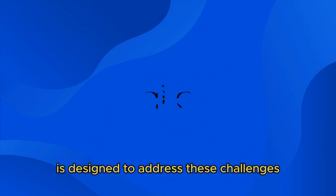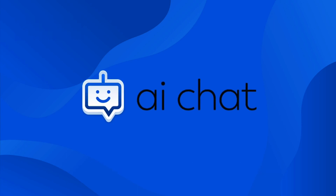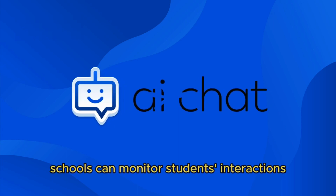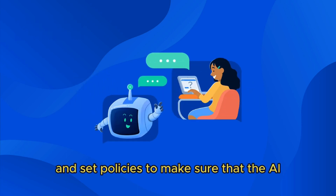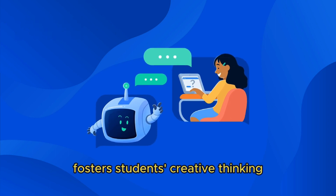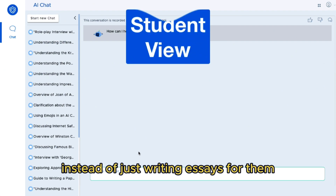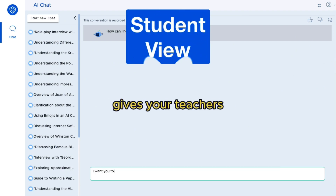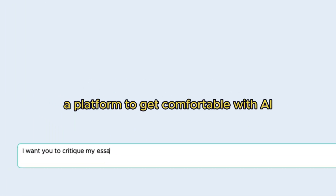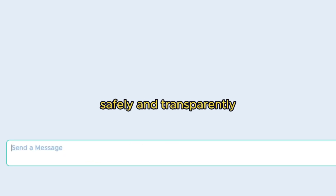AI Chat for Securely Filter is designed to address these challenges. With AI Chat for Securely Filter, schools can monitor students' interactions and set policies to make sure that the AI fosters students' creative thinking and love for learning, instead of just writing essays for them. AI Chat for Securely Filter gives your teachers a platform to get comfortable with AI and use it in the classroom safely and transparently.